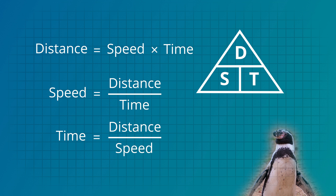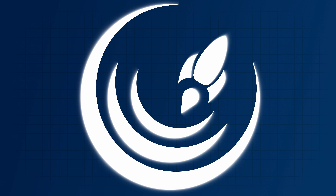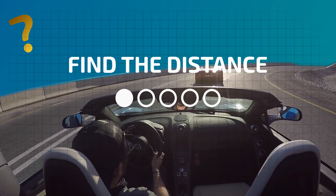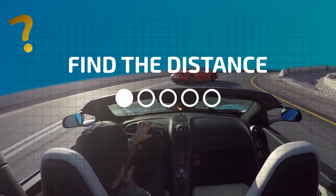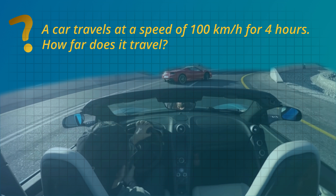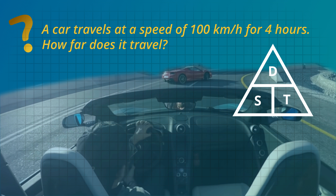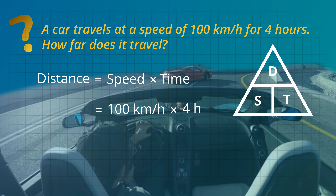Now let's test you out. Let's find the distance. A car travels at a speed of 100 kilometers per hour for four hours. How far does it travel? Remember the DST triangle — distance equals speed multiplied by time. The speed is 100 kilometers per hour and the time is four hours. So when we multiply them the distance equals 400 kilometers.